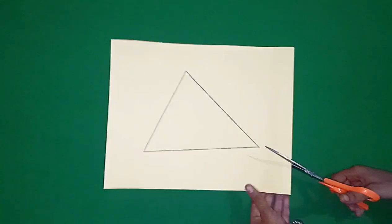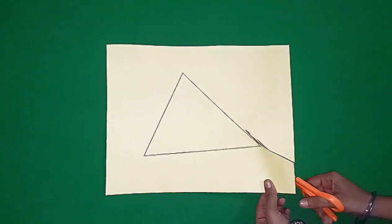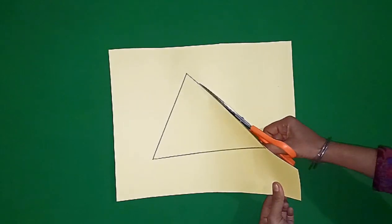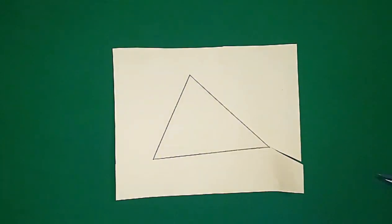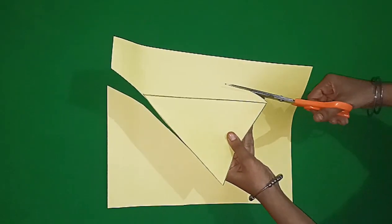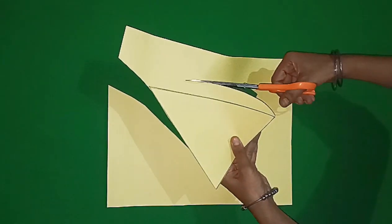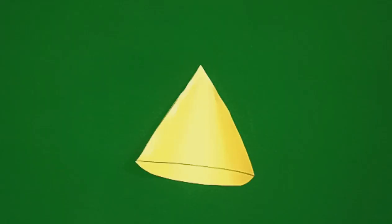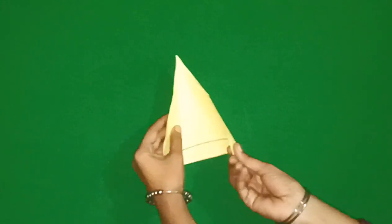Now we will cut it with scissors. Students, when we cut this triangle, we will cut the bottom line in a curved shape. Now, we have a triangle shape. Now, I will rotate it on its vertices.